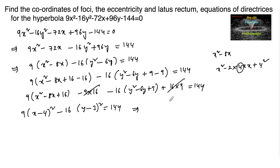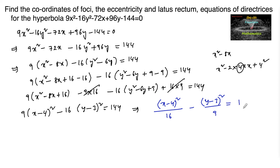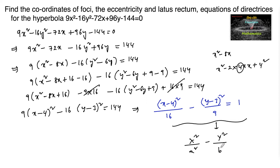Dividing throughout by 144: (x - 4)²/16 - (y - 3)²/9 = 1. This is now in the standard form of a hyperbola x²/a² - y²/b²= 1.